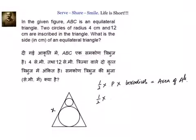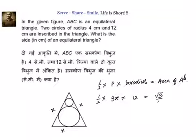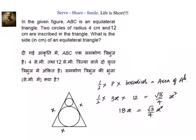Let's substitute. We don't know the side, so let us call it x. Half into 3x into inradius 12 equals area of equilateral triangle, given by root 3 over 4 into x squared. Simplifying, we get 18x equal to root 3 over 4 times x squared. Cancelling one x, we get x equal to 72 over root 3, which equals 24 root 3.